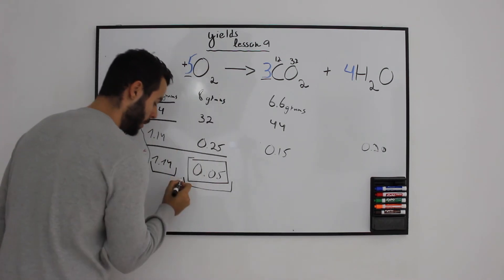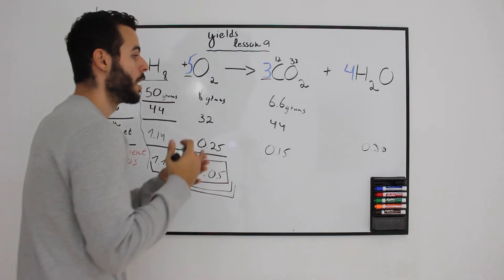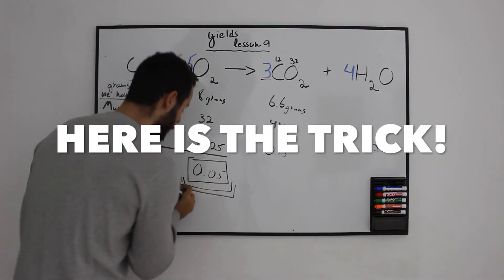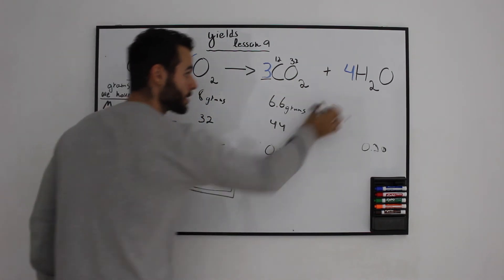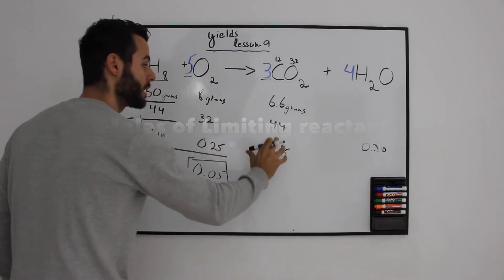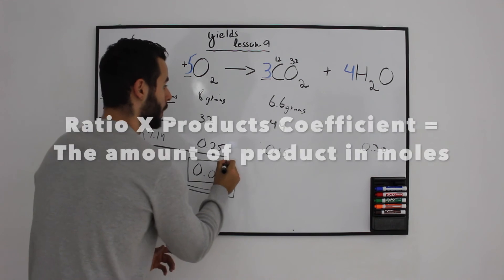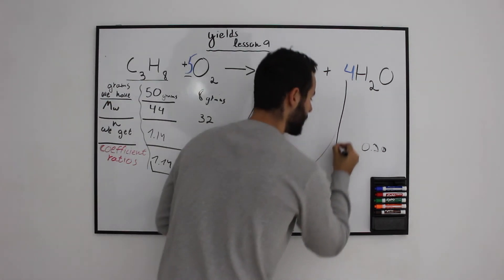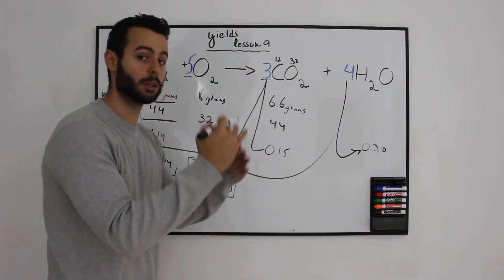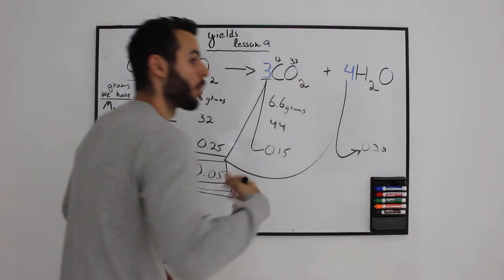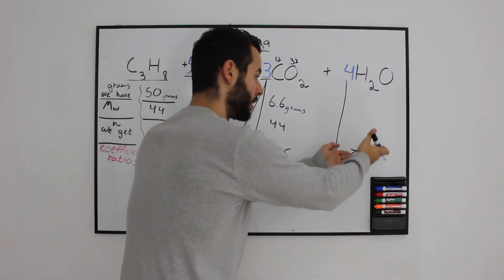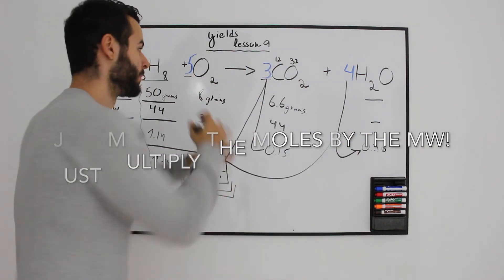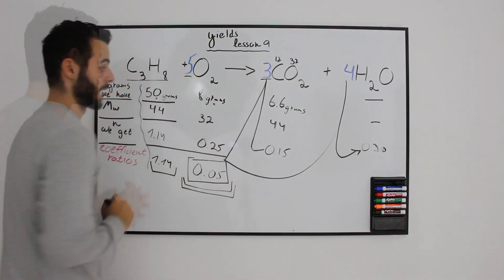So oxygen will limit the reaction. They are asking for the products given 8 grams of oxygen and 50 grams of propane. We take the limiting reactant's coefficient ratio and multiply it by the product coefficients — multiply by 3 to get moles of CO₂, and multiply by 4 to get moles of water. Then we climb up the table, take the moles of each product, multiply by the molecular weight, and get the grams.